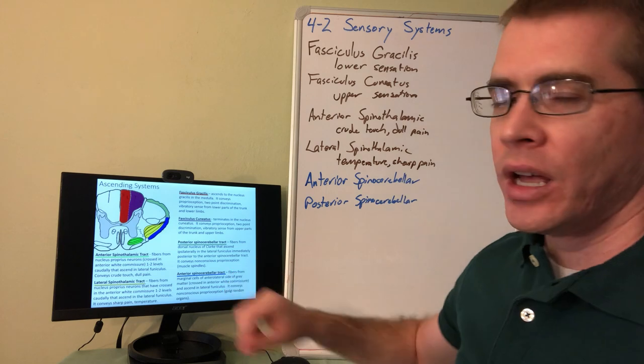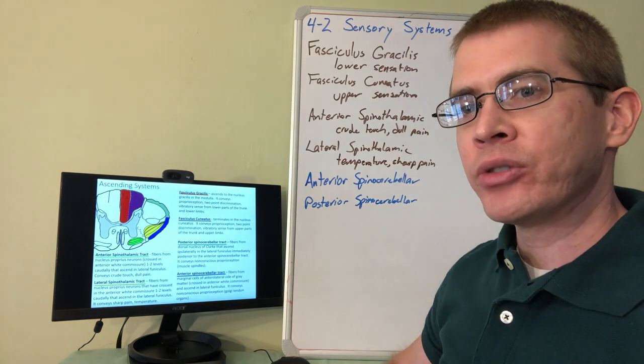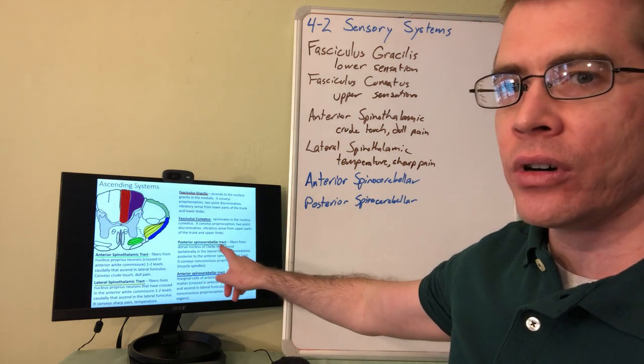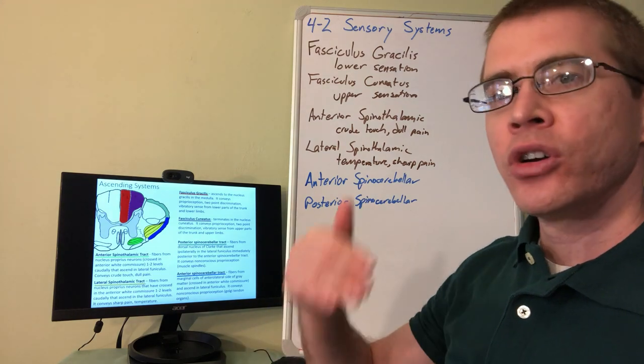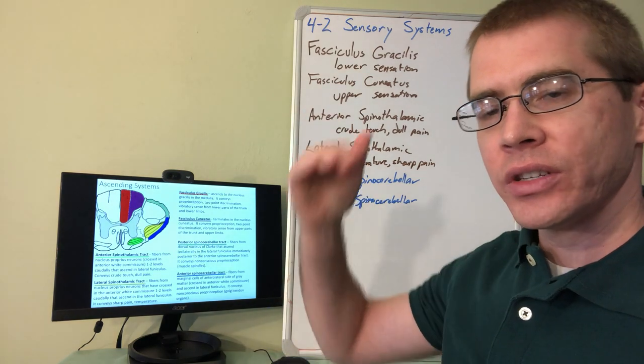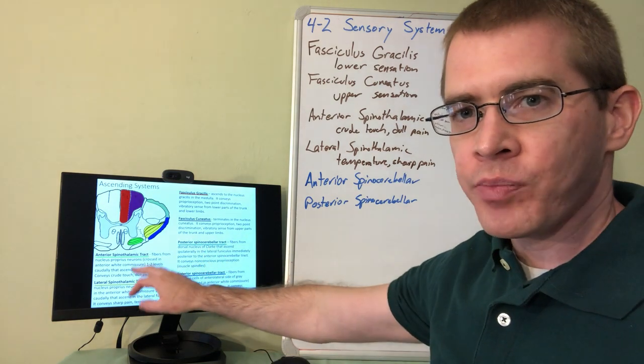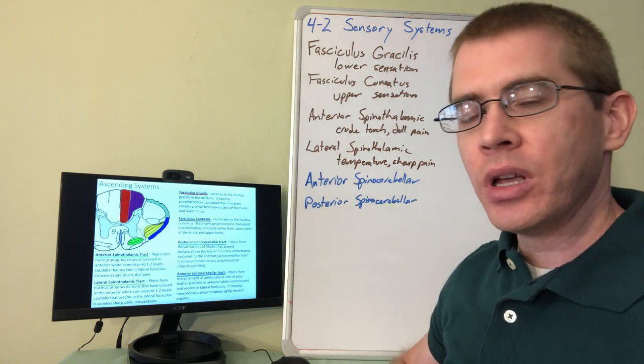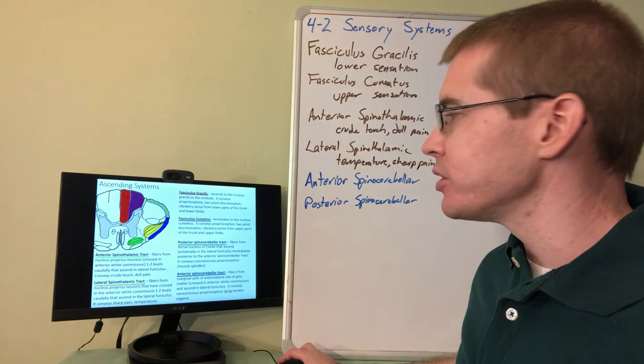The two unconscious that we're going to talk about are the posterior and anterior spinocerebellar tracts. Now notice how these names are formed too. So in the motor systems we had corticospinal because they started in the cortex and went down to the spine. Here we have spinocerebellar or spinothalamic because they're starting in the spine and then going up to a different region of the central nervous system.